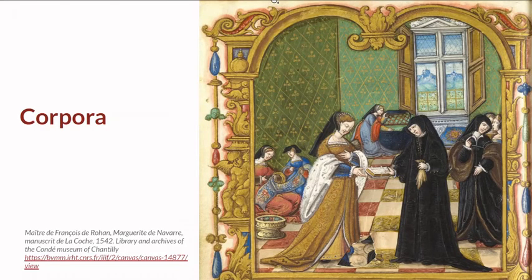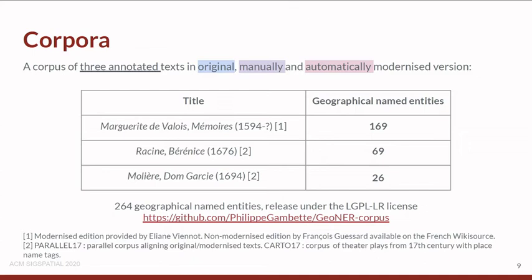The corpora used for this project are a set of three annotated texts in their original, manually modernized, and automatically modernized versions. Our corpora are composed of the memoirs of Marguerite de Valois, using a modernized version provided by Eliane Viennot and the original version by François Guézard, available on the French Wikisource.